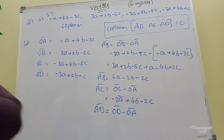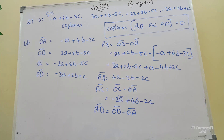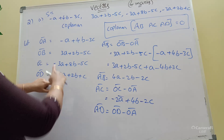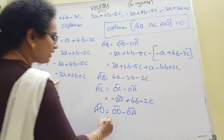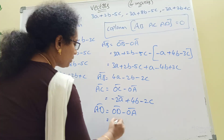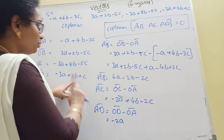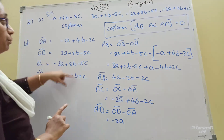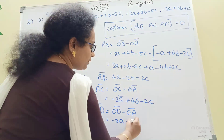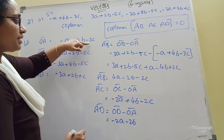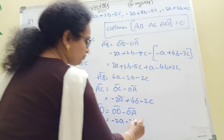OD bar minus OA bar. OD bar is this, minus that. 3A plus A gives minus 2A. 2B minus 4B gives minus 2B. C minus plus, 1 plus 3 gives 4C. So AD bar equals minus 2A minus 2B plus 4C.